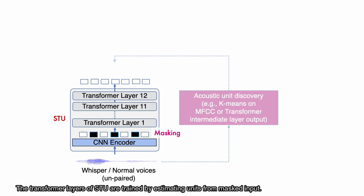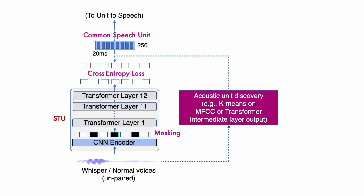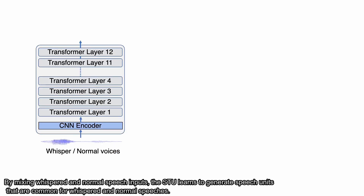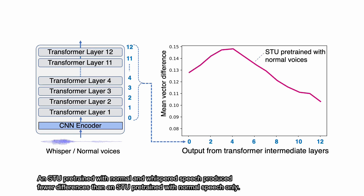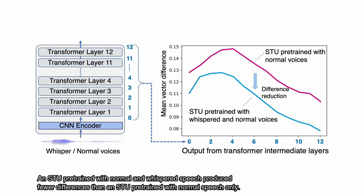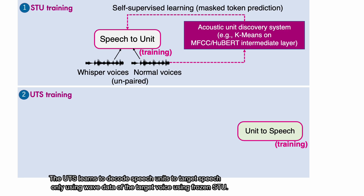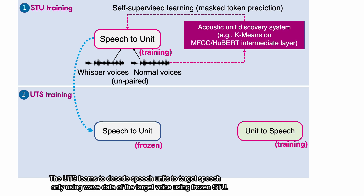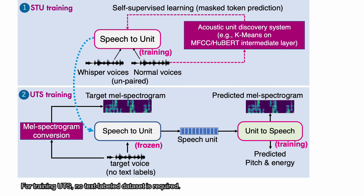The transformer layers of STU are trained by estimating units from masked input. By mixing whispered and normal speech inputs, the STU learns to generate speech units that are common for whispered and normal speeches. An STU pre-trained with normal and whispered speech produced fewer differences than an STU pre-trained with normal speech only. The UTS learns to decode speech units to target speech using data of the target voice with frozen STU, and no text-label dataset is required.